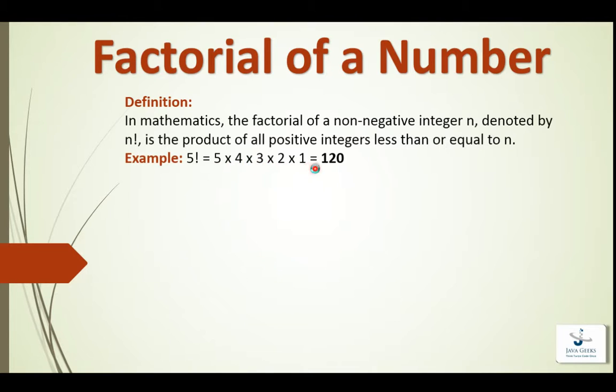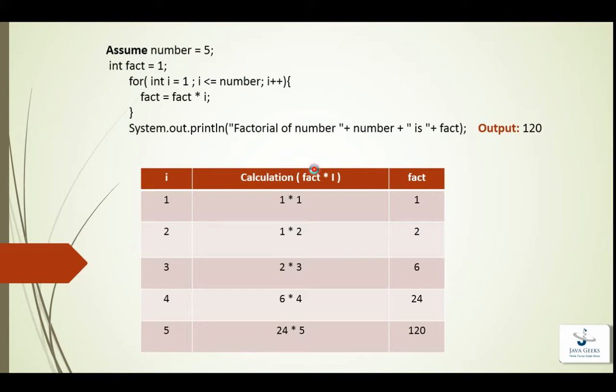So let's see how to write a code to find out the factorial of a number. As we have assumed that user inputted the number, that is 5. So here I have declared a variable and initialized a variable named fact as 1.